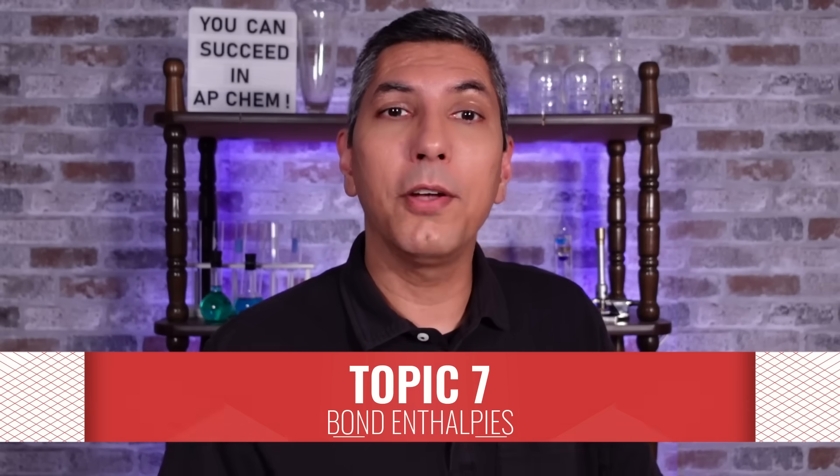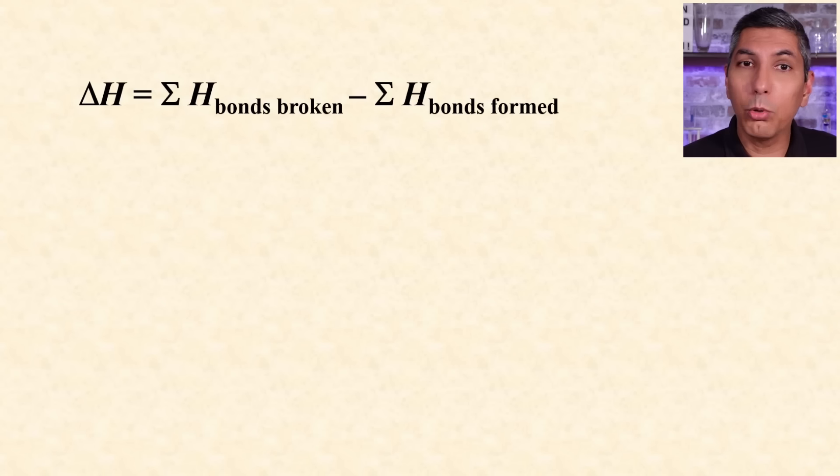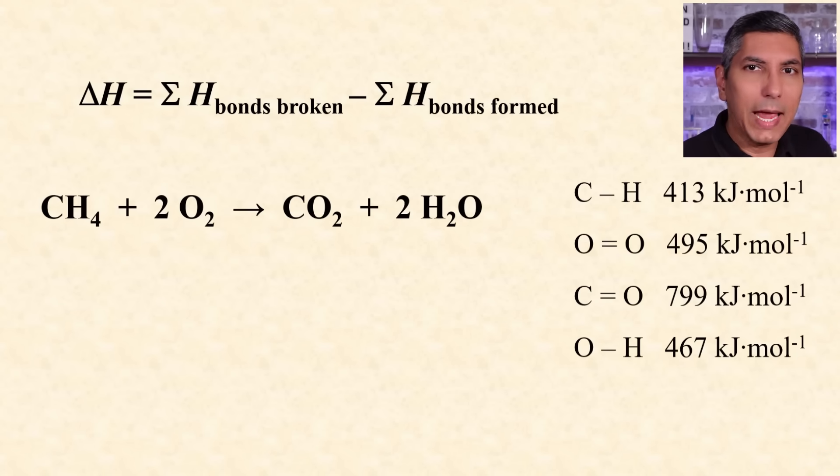One way to determine the change in enthalpy of a reaction is to use bond enthalpies, sometimes called bond energies. Some chemical bonds require more energy to break than others. So with a list of bond enthalpies, we can determine the delta H of a reaction by taking the total enthalpies of the bonds broken minus the total enthalpies of the bonds formed.